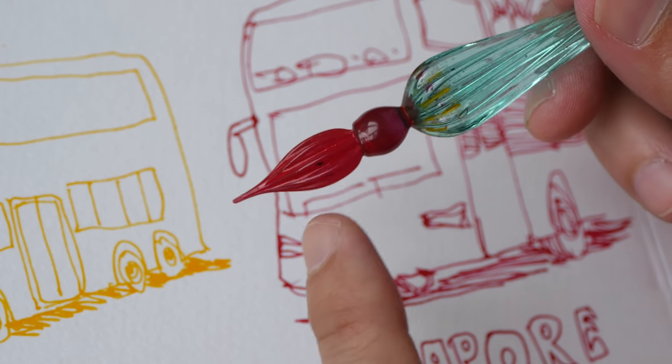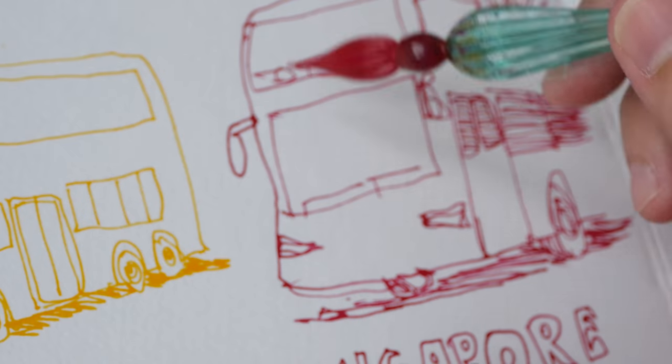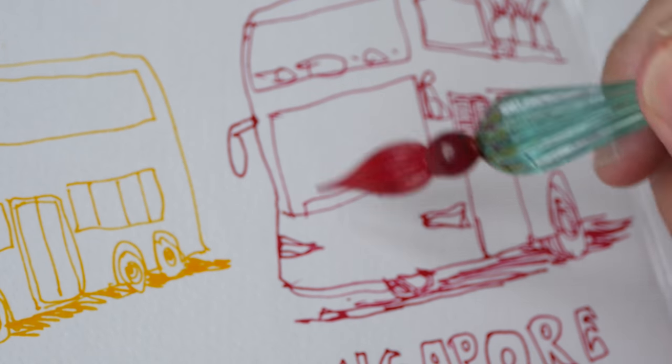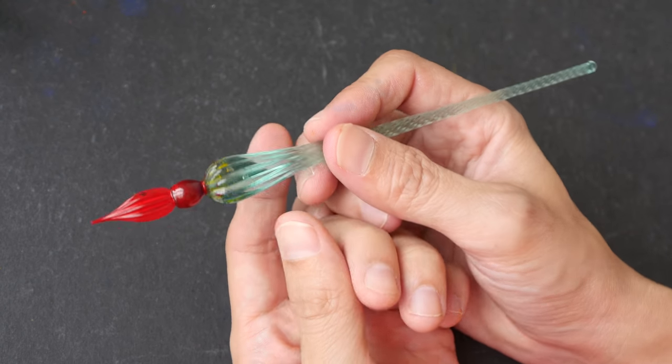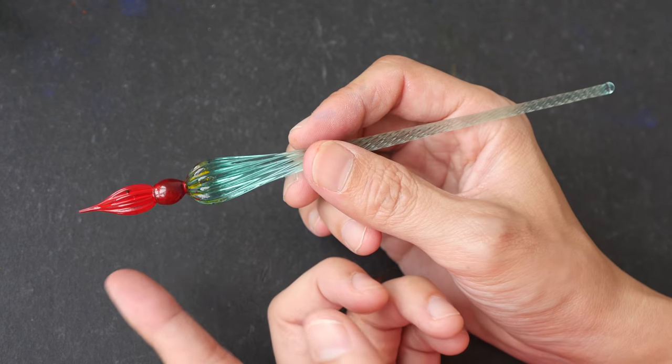But the downside is, this is glass, it's not flexible. So the type of lines you are going to get are those uniform lines. Another area of concern for me would be on how you can bring this pen around. Because this is glass, it's going to be fragile.